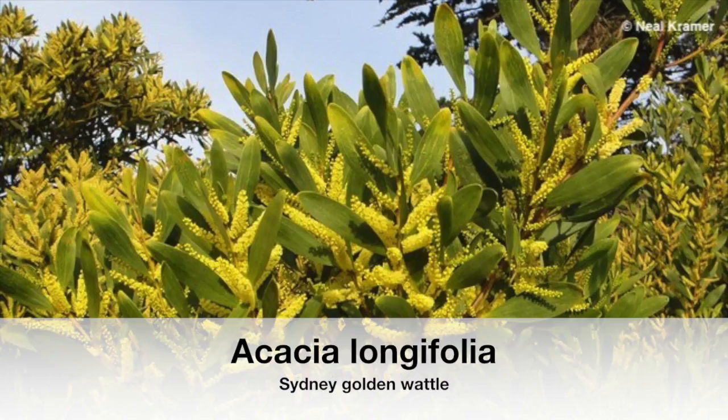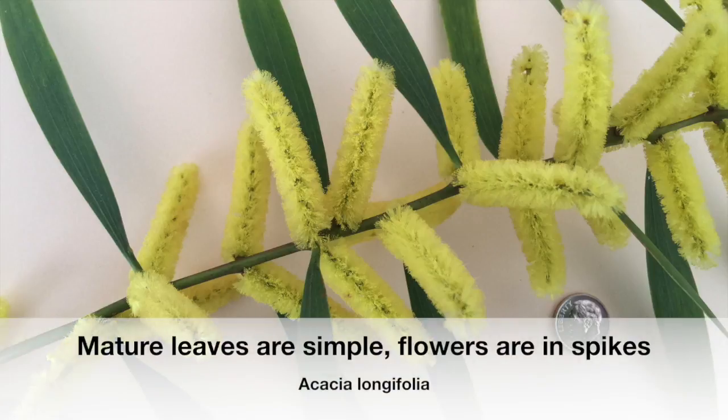The Sydney golden wattle, Acacia longifolia, is a shrub with multiple large woody trunks. It has mature leaves that are simple, not divided in containing leaflets, with one or more prominent veins. The flowers are in spikes, appearing along an elongated axis.